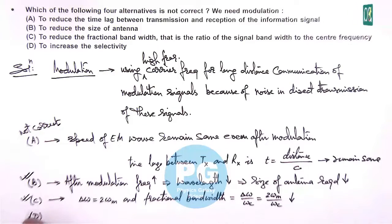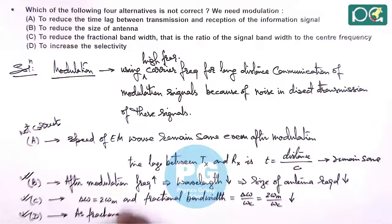In option D it says to increase the selectivity, that's right. So we can write as fractional bandwidth on a spectrum decreases.